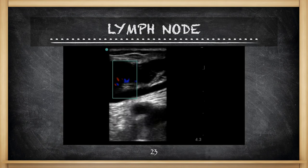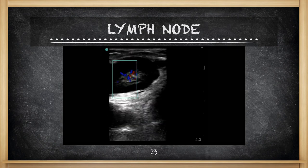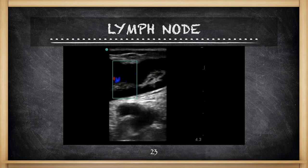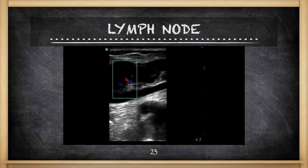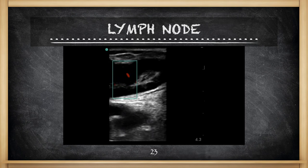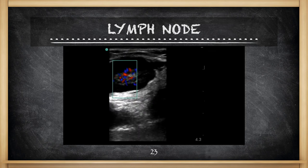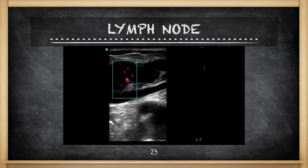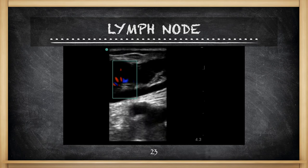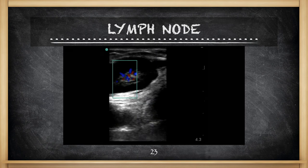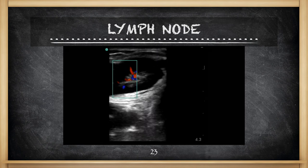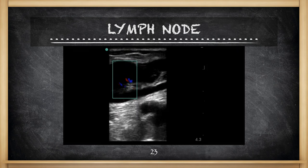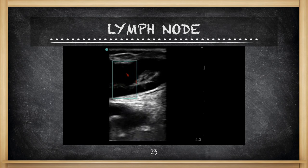Sometimes there are structures you will encounter as you go down the leg which may appear as an echogenic focus and make you think you have a blood clot. This is actually a lymph node, and in patients coming in with lower extremity swelling complaints, they might have swollen lymph nodes. The way to tell the difference is to put color flow over the structure — if you see branching in the center that looks like a micro kidney, that is more suggestive of a lymph node. Also, a lymph node will appear and disappear and will not be continuous all the way down the leg.